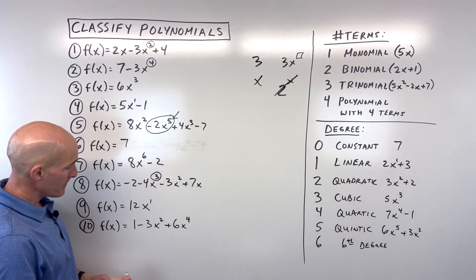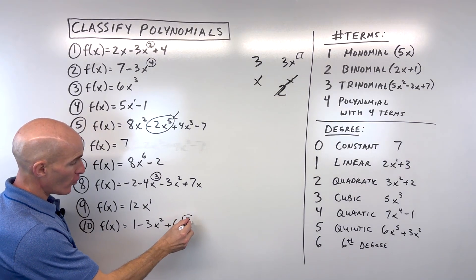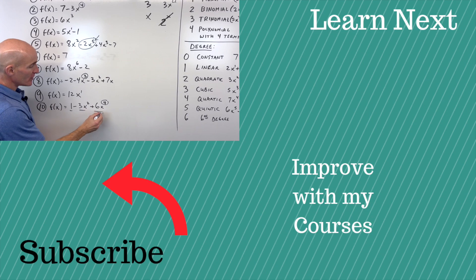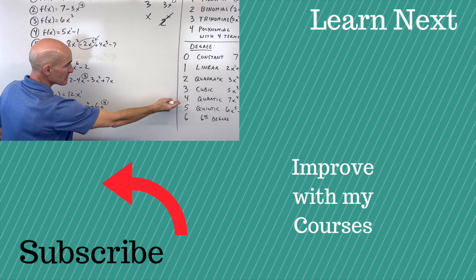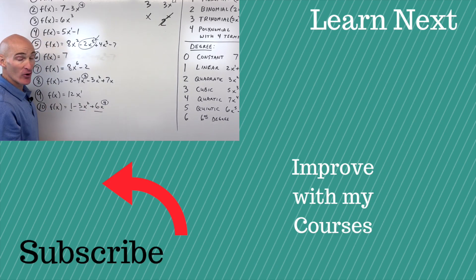And then the last one, what do you think for this one? Highest exponent is four. We have one, two, three terms, so it's a trinomial. So I would call it a quartic, fourth degree, quartic trinomial.